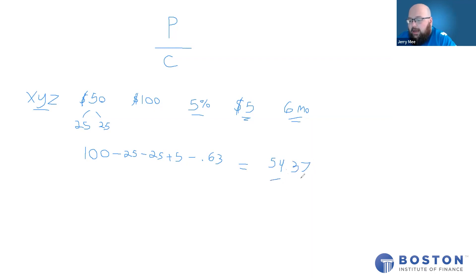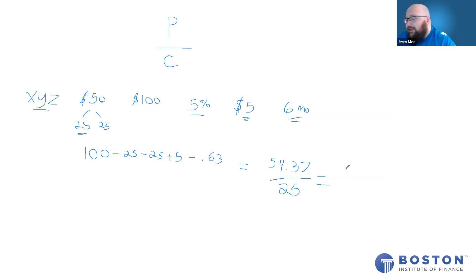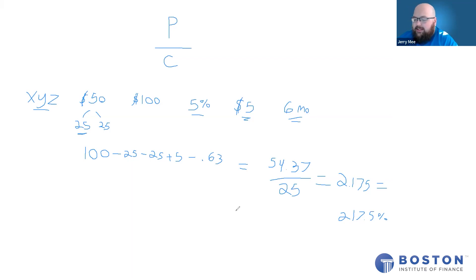Our cost is once again just the amount we invested out of pocket, which is $25. So $54.37 divided by $25 gives us a holding period return of 2.175, which equals a 217.5% holding period return. Not bad for six months of investment.